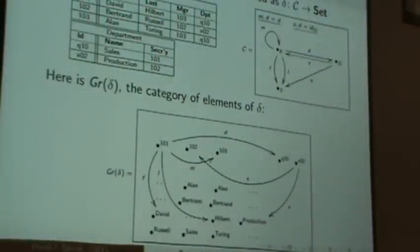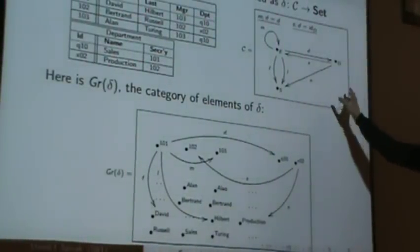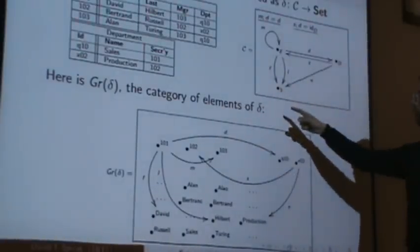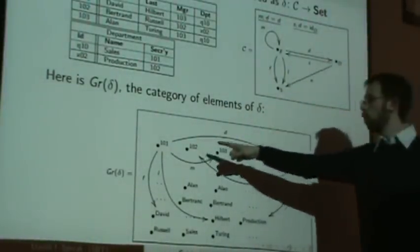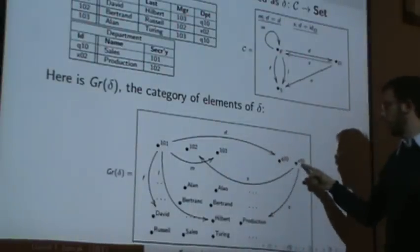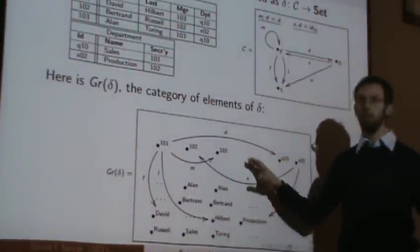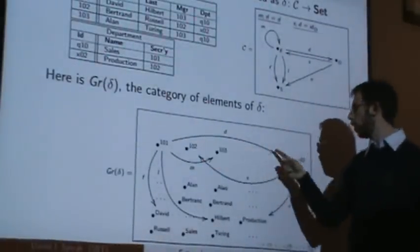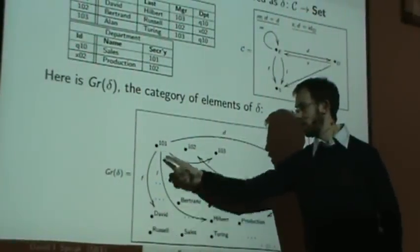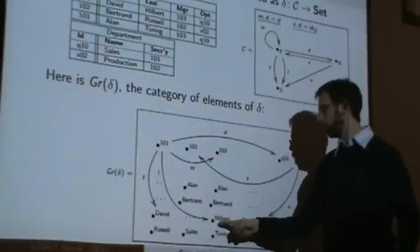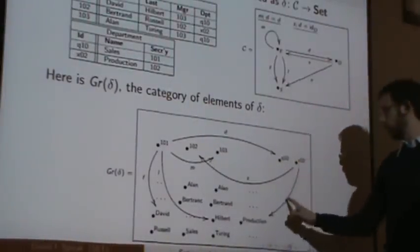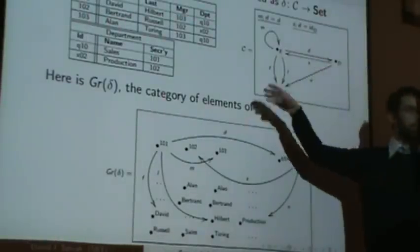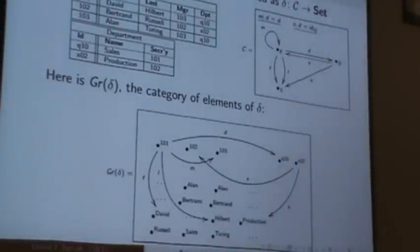So what does it mean on a database state? Because that's what a database state, I was saying, is. I have a category which is a schema, and I have a state which is the functor to sets. And if you remember, this was the picture of our category and this was the state on it. Well, the Grothendieck construction of it, I'm going to throw 101, 102, and 103, Q10 and X02 and all of the strings in the world into one gigantic category. And I'm going to throw an arrow in for the department of 101 is Q10. The first name of 101 is David. The last name of 101 is Hilbert. The manager is 103. The name of X02 in production. And I will do that for all of them. So it's a much, much bigger thing, but I didn't want to have arrows everywhere in there.